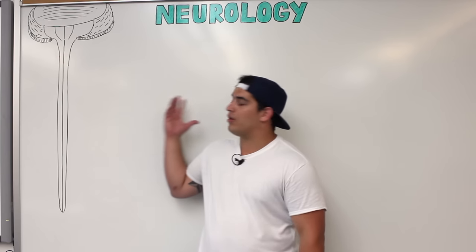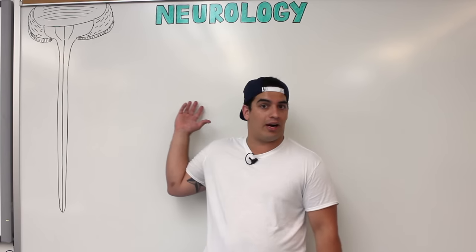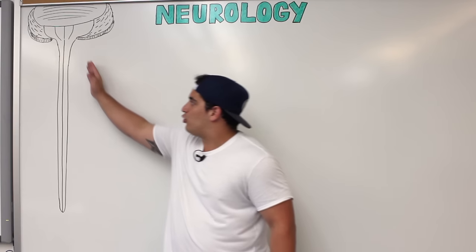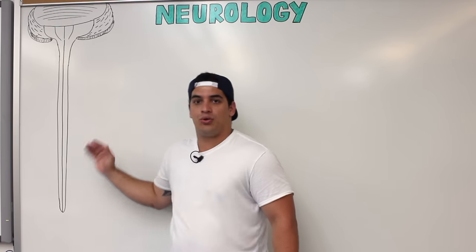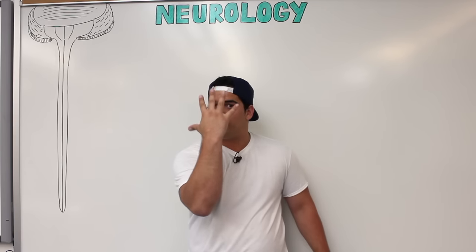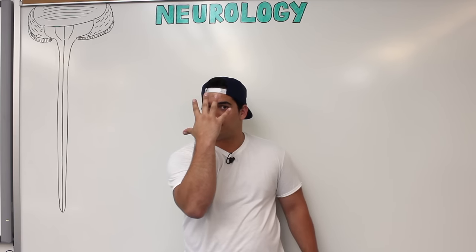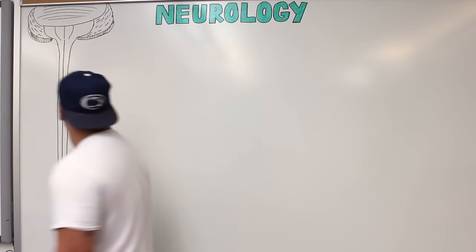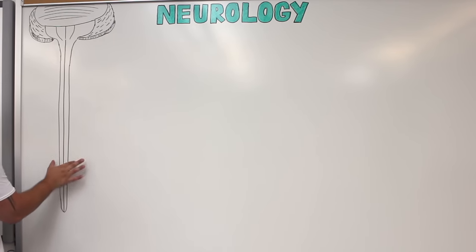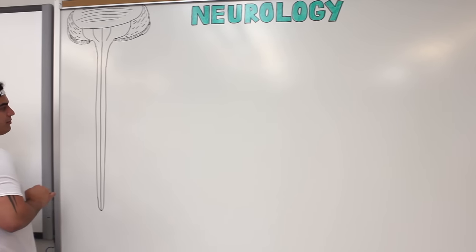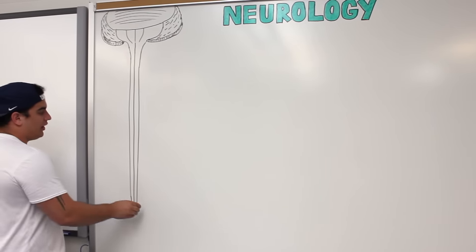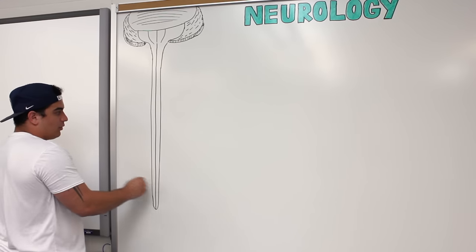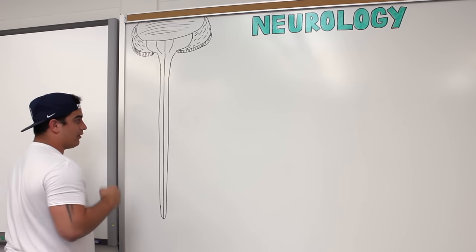Before we go into all the detail and diagrams, let's quickly look at an anterior view of the spinal cord. If you look here at the anterior view, this is actually going to be the spinal cord right here, and up here are going to be your cerebellum, medulla, and pons.